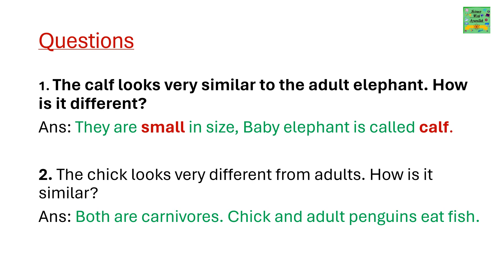Question: The calf looks very similar to the adult elephant — how is it different? They are small in size. A baby elephant is called a calf. The chick looks very different from adults — how is it similar? Both chick and adult penguins eat fish.